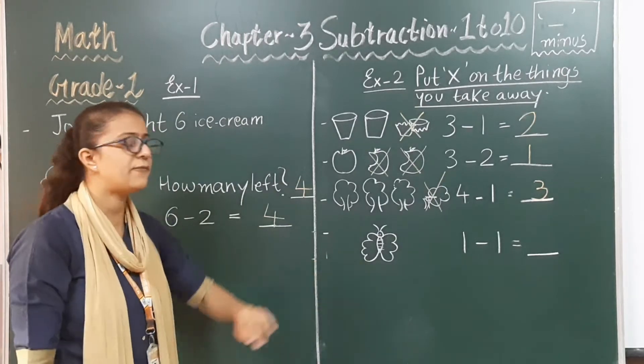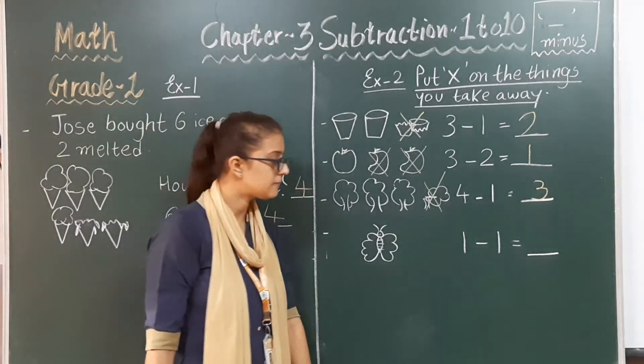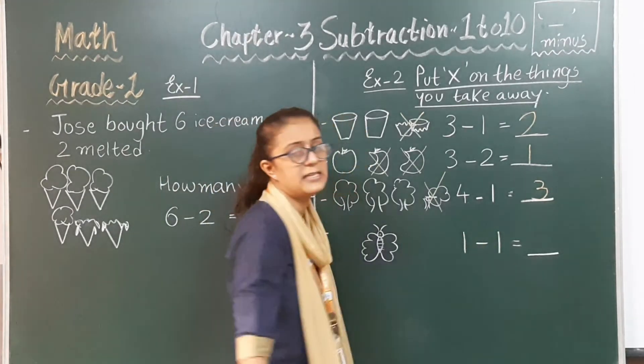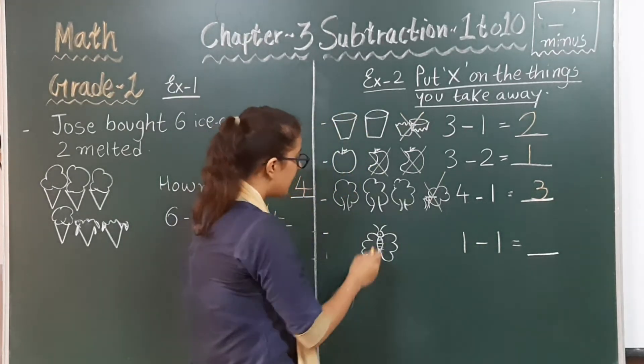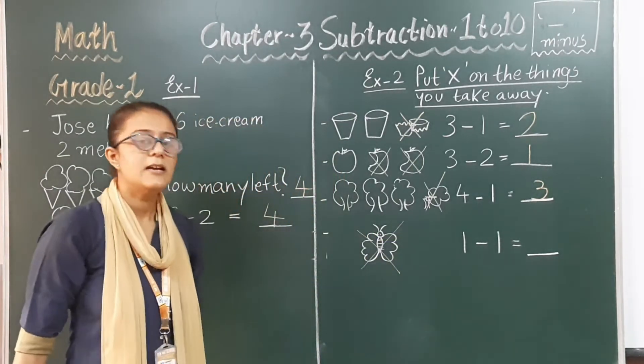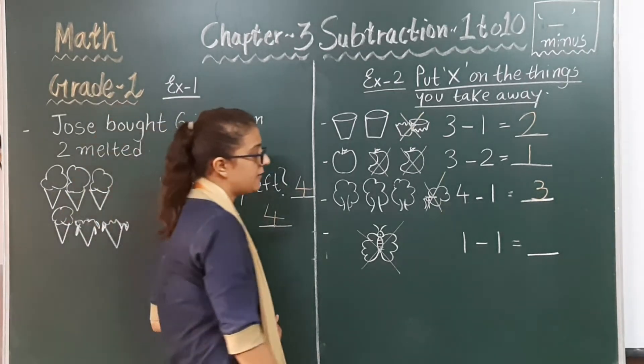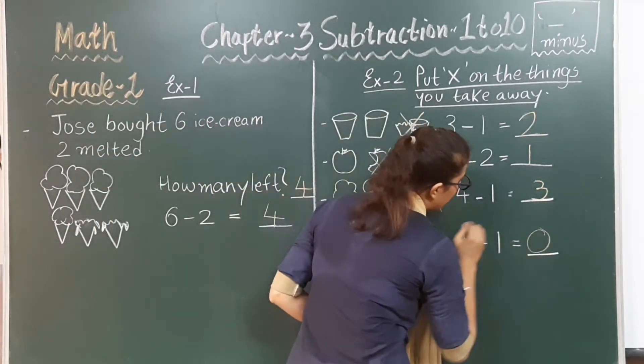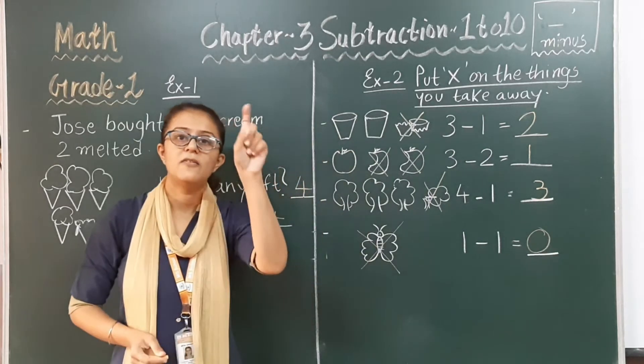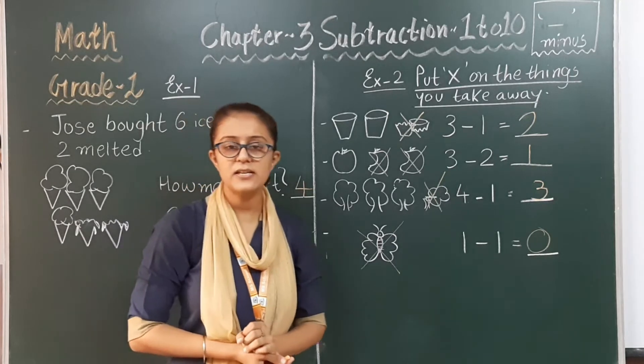There is a beautiful butterfly over here. Only one butterfly is there. And one minus one is written here. From one butterfly we minus one butterfly. One butterfly take away one butterfly. So how many we will get? That is zero. One minus one equals zero.